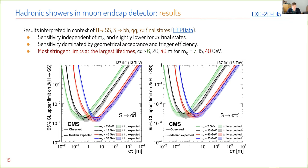Results are interpreted in various final states — jets and hadronic taus — for a wide range of masses. The sensitivity does not really depend on the mass and final state; instead it's driven by geometric acceptance and trigger efficiency. I want to highlight the high-lifetime regime: above 7, 15, and 40 meters respectively, these are the most stringent limits in hadronic final states from CMS.